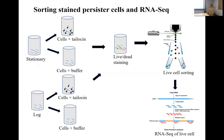Regarding what growth phase pathogens are in during actual plant infections — at the initial phase of infection, those bacteria are probably actively dividing, similar to what we see with log phase cultures. But there will be a dynamics of different populations. How tailocin activity will be in actual plant experiments is something being studied, and hopefully we'll have more inputs on that. It could be a mix of populations in the actual host environment.